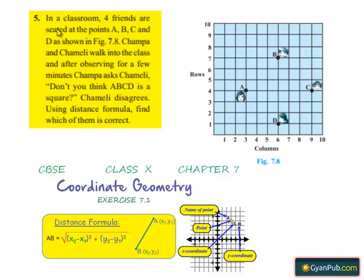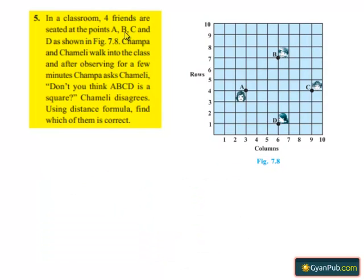Coming to the fifth question: in a classroom, four friends are seated at the points A, B, C and D as shown in figure 7.8. Champa and Chamele walk into the class and after observing for a few minutes, Champa asks Chamele, 'Don't you think ABCD is a square?' Chamele disagrees. Using the distance formula, find which of them is correct.